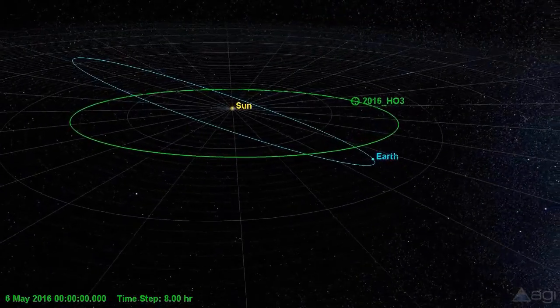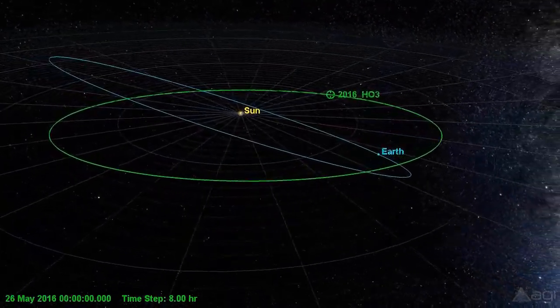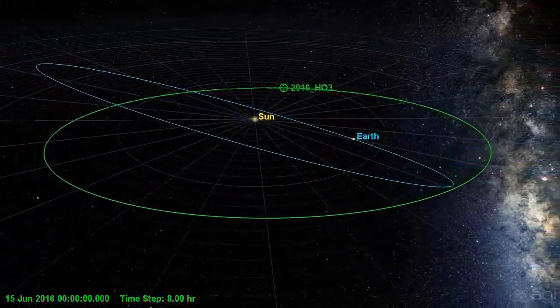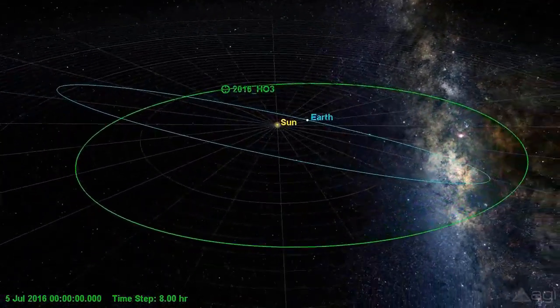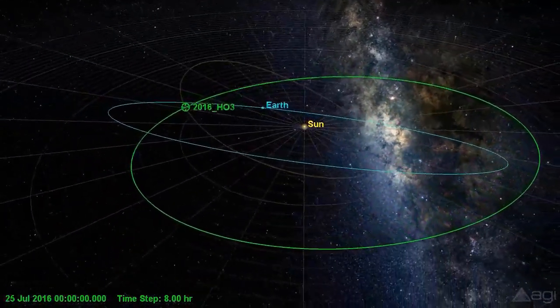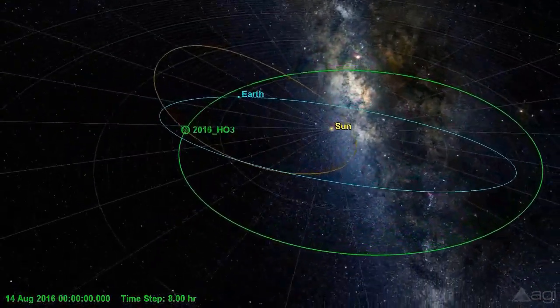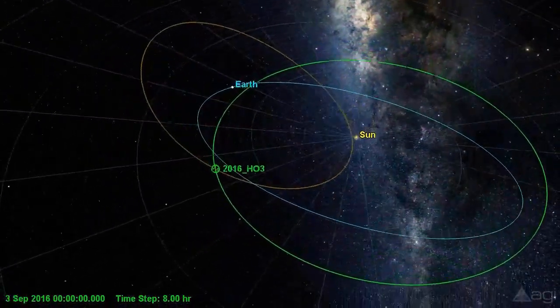It was first spotted on April 27, 2016, by the Pan-STARRS 1 asteroid survey telescope on Haleakala, Hawaii, operated by the University of Hawaii's Institute for Astronomy. Its name is Kamo'oalewa, derived from the Hawaiian language meaning 'oscillating celestial object.'